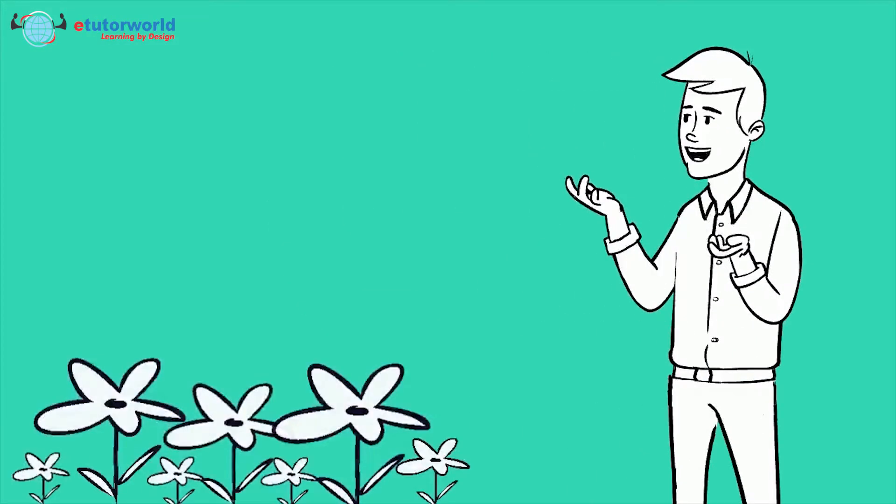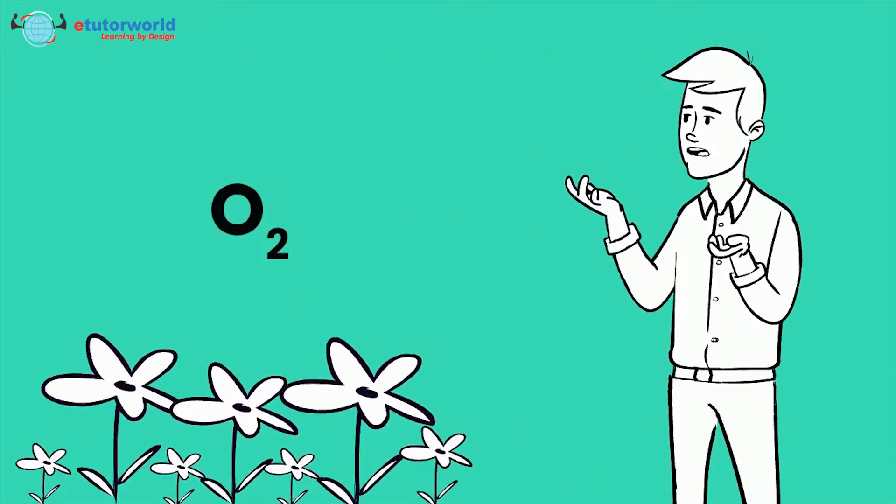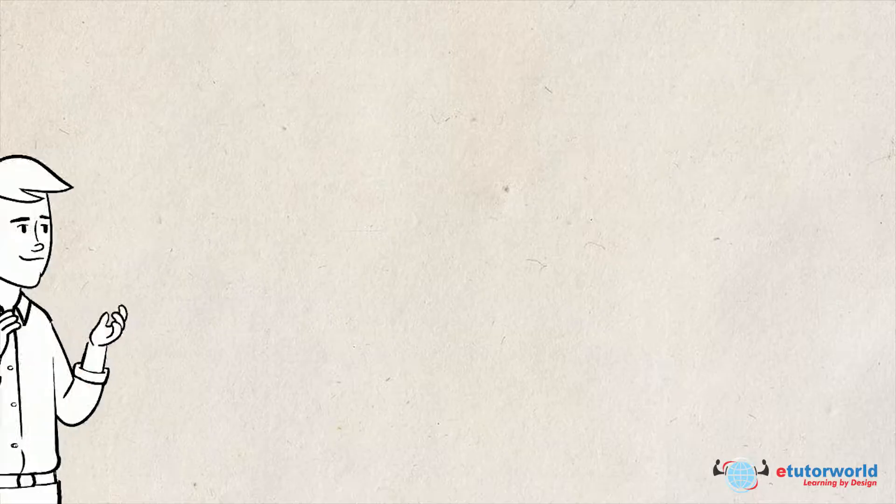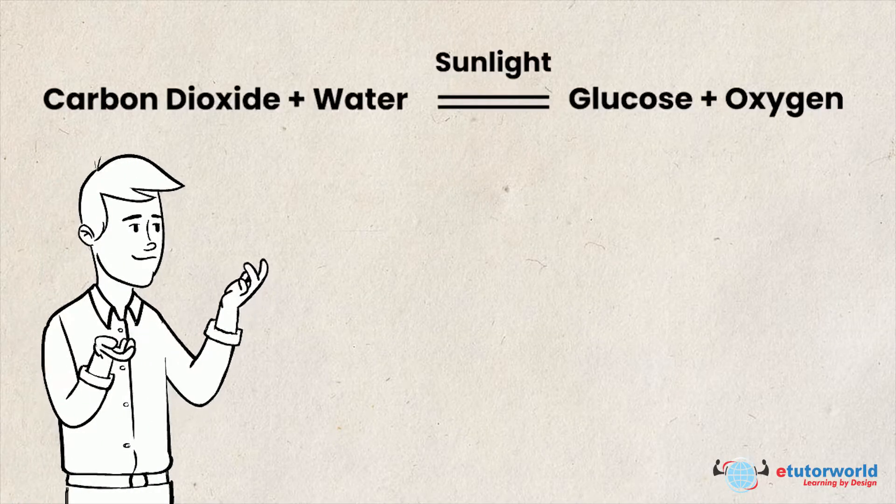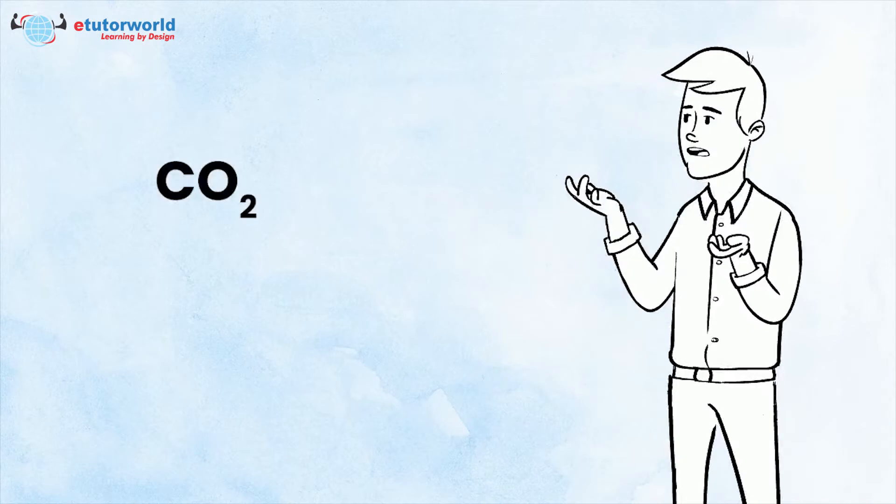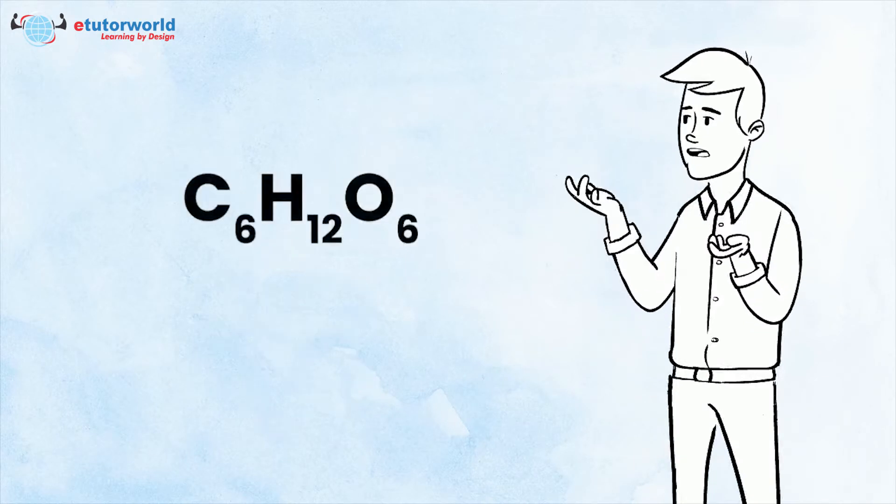In this process, carbon dioxide is taken in by the plants, and oxygen is given out. Carbon dioxide and water combine and their atoms bond to form sugar molecules.